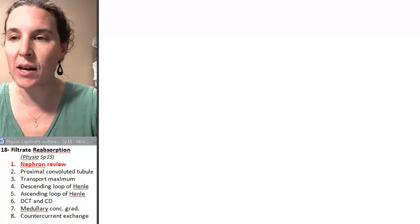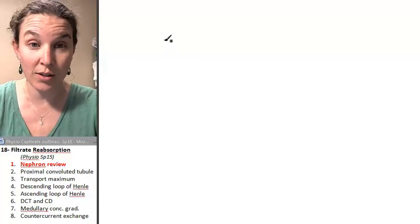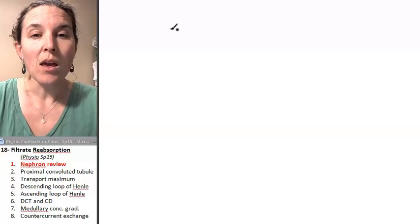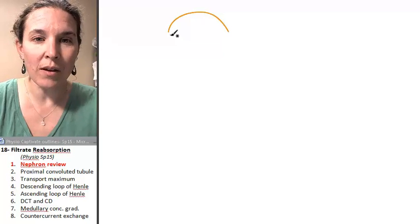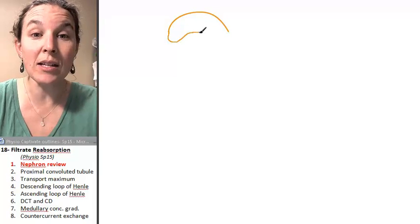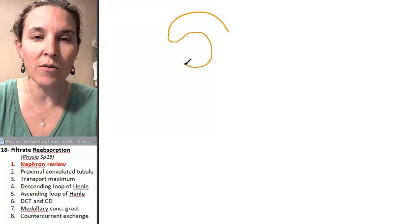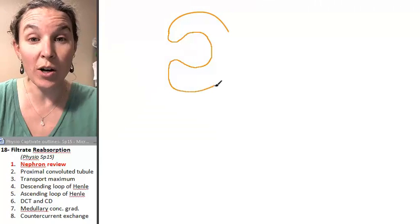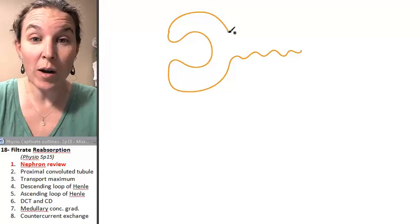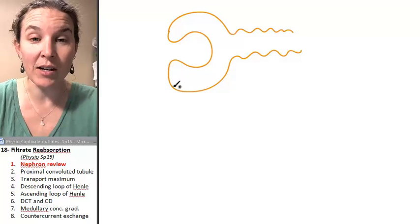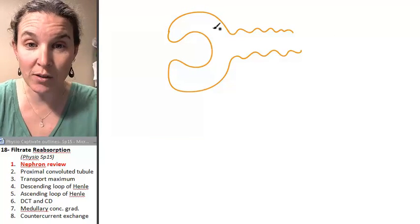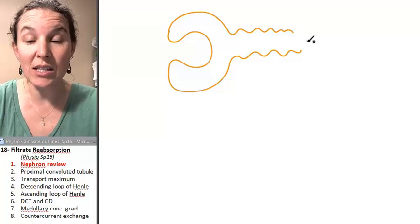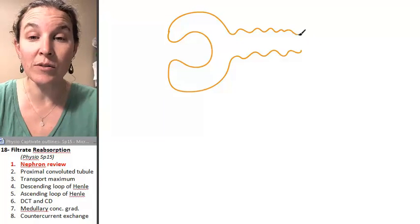So let's just go ahead and draw ourselves a nephron. In the last lecture, we dealt with the process of filtration, which is very important and takes place from the glomerulus, a knot of capillaries, and into Bowman's capsule. This is Bowman's capsule, which flows into the proximal convoluted tubule.